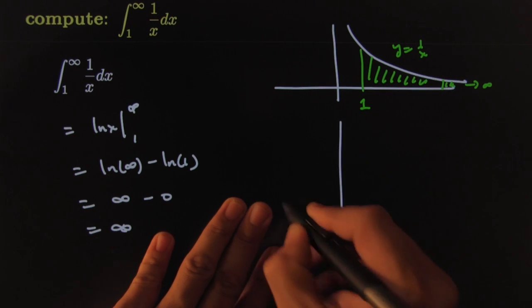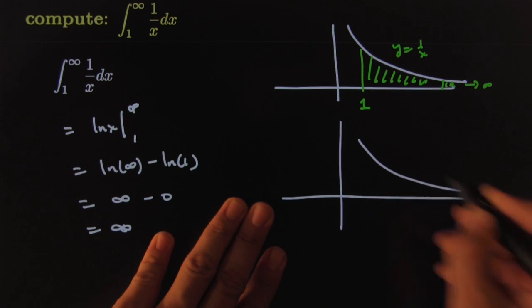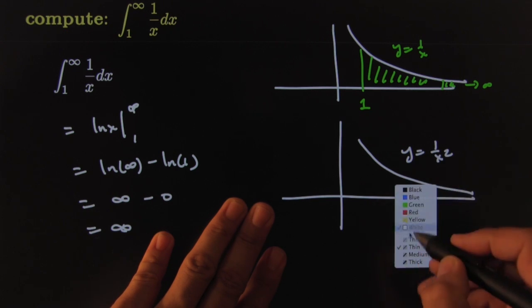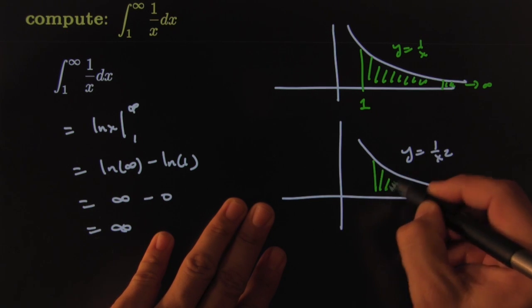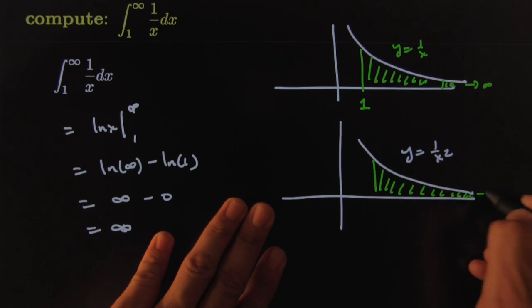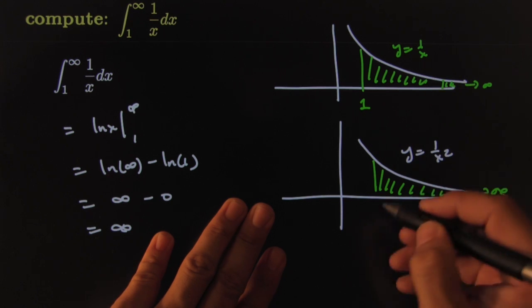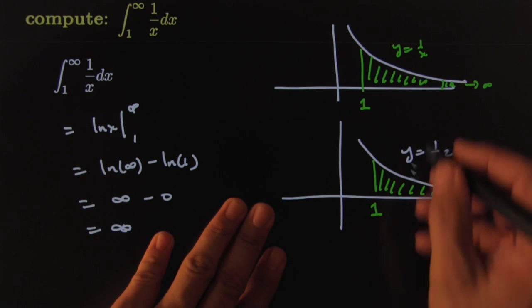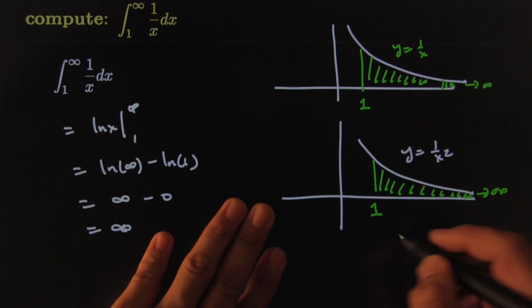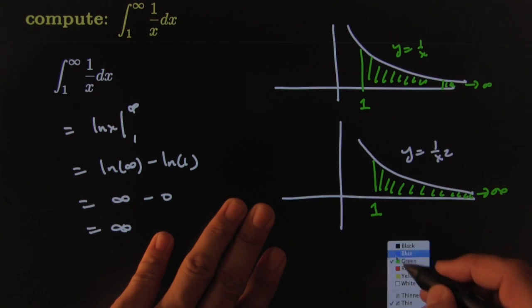And the area that we had represented was something like this, and it went infinitely long, almost indistinguishable from here. But when we computed this integral, it turned out to be the integral of x to the negative 2 dx from 1 to infinity.